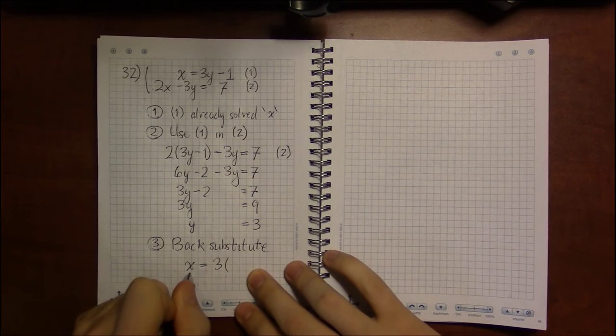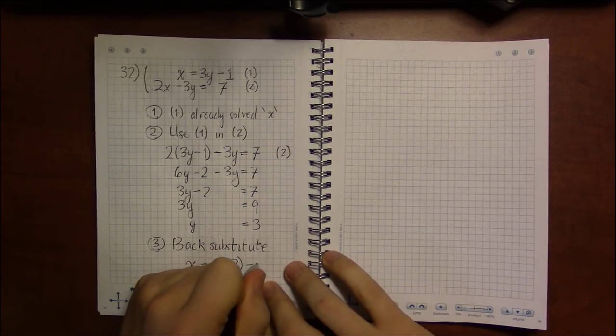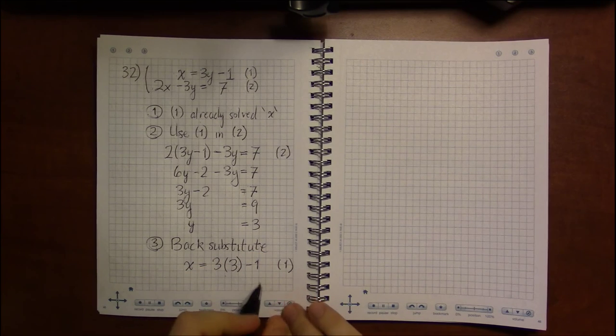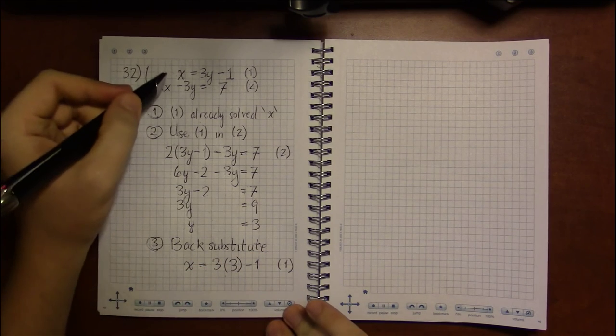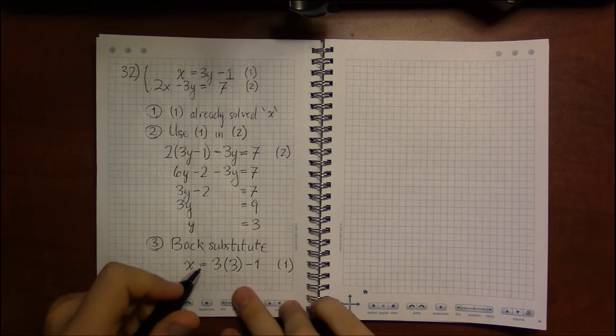So we'll say that x is 3 times 3 minus 1. So this is just now a new way of writing equation 1, seeing that y we now know to be 3.